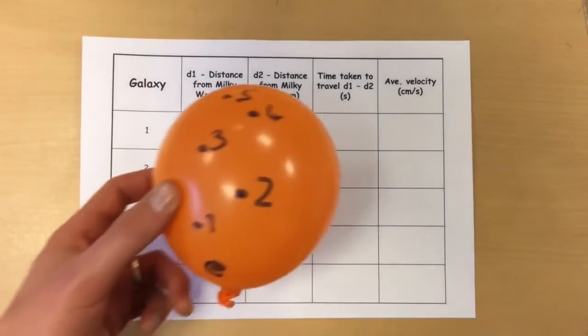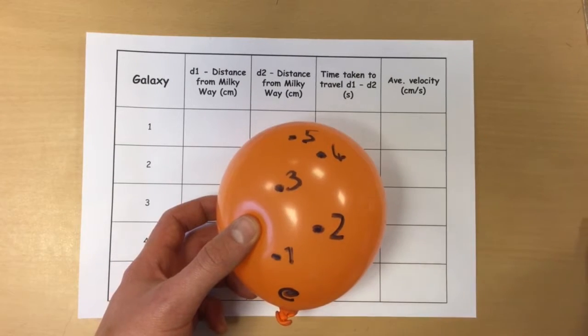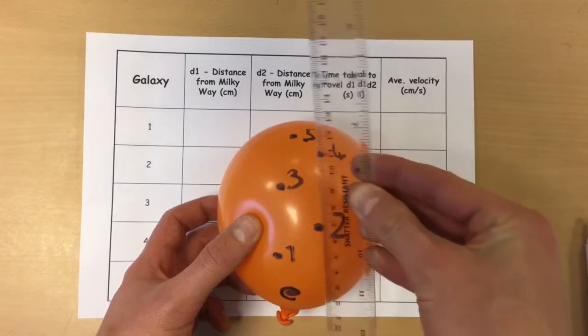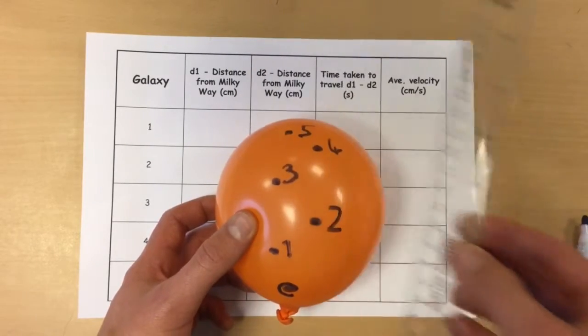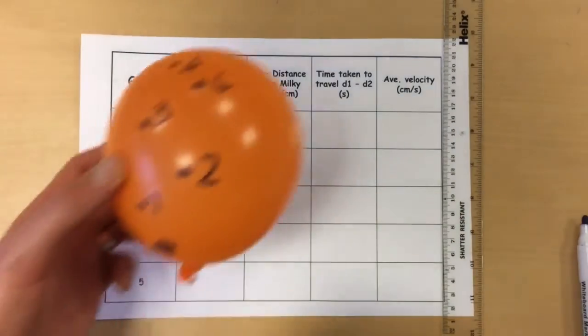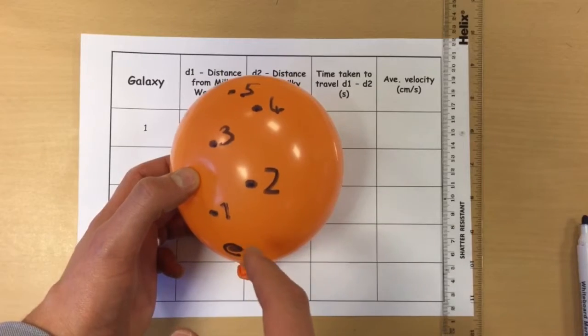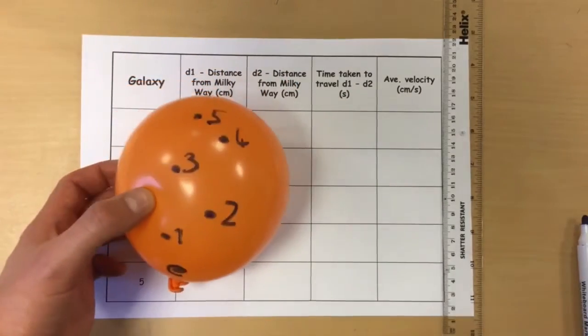So the first one is the distance away from the Milky Way. So what we're going to do is we're going to take a ruler and we're simply going to measure the distance from the Milky Way to 1, 2, 3, 4 and 5 and we're going to write it down here. Once we've done that we're going to blow this up to almost full and then we're going to do the same again for this column. But I'll show you that just now.